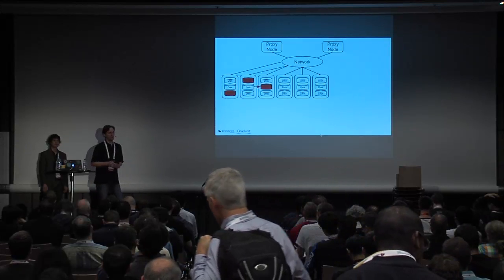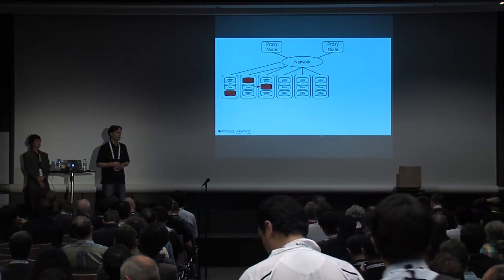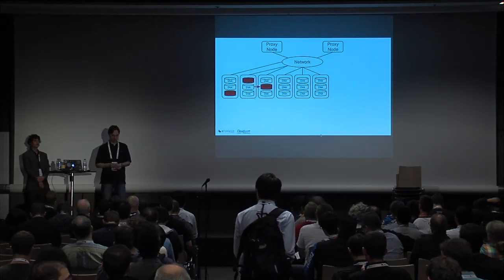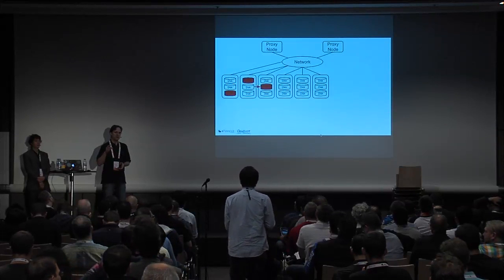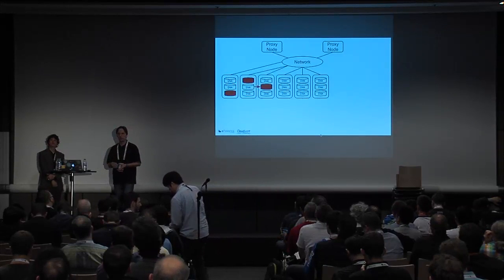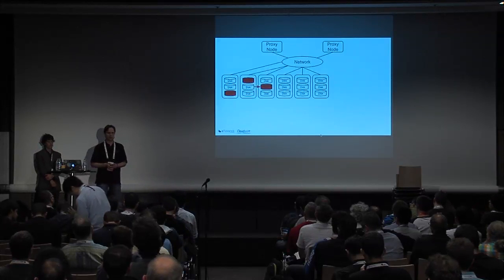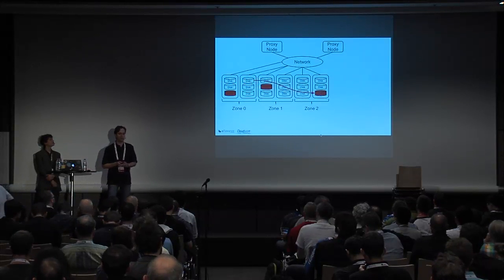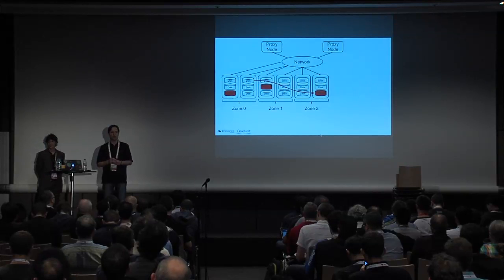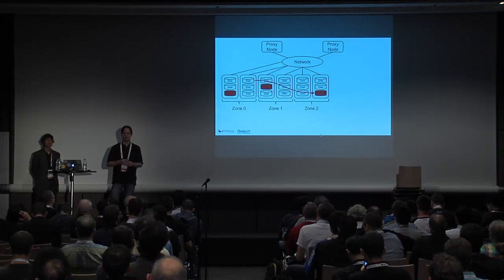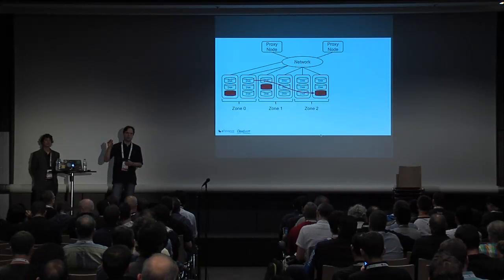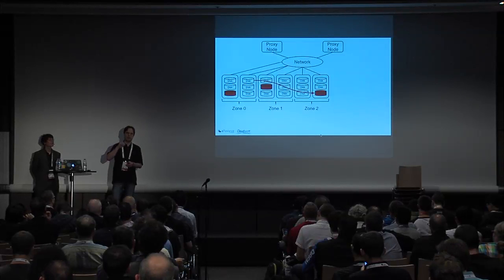There are failure domains in your data center — your network uplink, power, network switches, and so on. You might want to ensure that each copy of your objects ends up in different areas. To ensure this, there is a concept called zones. For example, you can group different storage nodes into different zones — say three racks — and ensure that when you put an object into Swift, all three replicas end up in different racks.